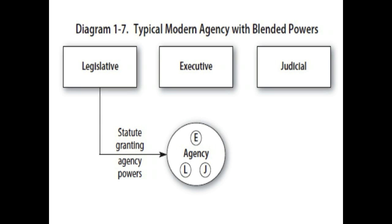For example, OSHA conducts inspections of workplaces and brings enforcement proceedings to correct violations. The J in the circle represents quasi-judicial or adjudicative power — the power to make binding rulings applying the law to particular factual situations, like welfare agencies deciding individual applications for benefits. These graphic components are introduced early in the course and remain relevant throughout, helping students tie concepts together. A combined graphic illustrates that modern agencies are typically associated with the executive branch but derive much of their power from the legislative branch, and often hold a combination of powers.